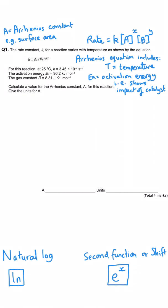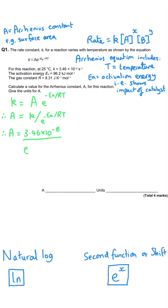In this first question we're asked to calculate A, so we have to rearrange the Arrhenius equation to make A the subject by dividing both sides by e to the power of minus activation energy over RT. We substitute our values in: the rate constant is 3.46 times 10 to the minus 8; activation energy is 96.2 kilojoules per mole, which needs to be in joules so we multiply by a thousand; R is in joules per Kelvin per mole; and temperature must be in Kelvin, so 25°C is 298 K.